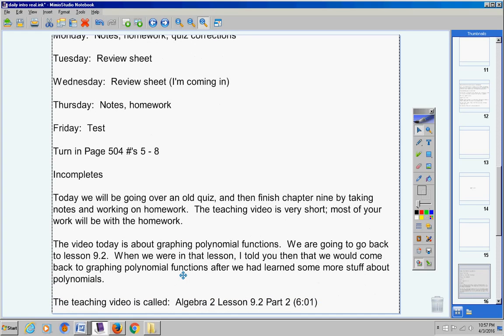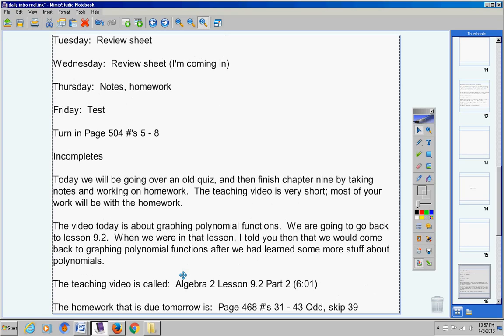The teaching video is called Algebra 2 Lesson 9.2 Part 2, just six minutes long. So like I said, a pretty short video. There's your homework: page 468 numbers 31 through 43 odd. Be sure to skip 39. We're not skipping it because we don't know how to do it. We're skipping 39 because there were no zeros. I did not feel like it was a very good problem to work on. So that's the only reason we're skipping that.